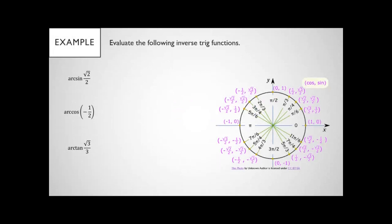To work with some known values, we're going to find some inverse trig functions based off of the unit circle, because we can find these exactly and then verify with a calculator. The first one is arc sine of square root of 2 over 2. This is saying: what angle gives us a sine of square root of 2 over 2?